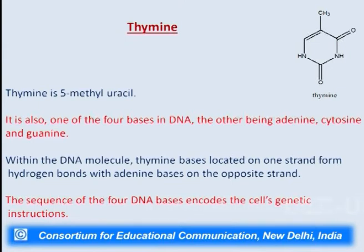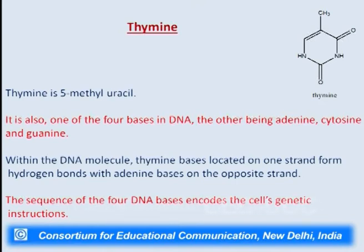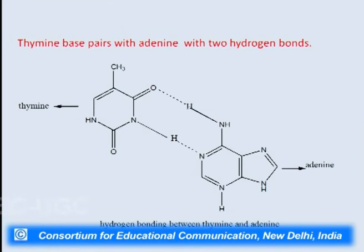The next important nucleobase is thymine, which is a pyrimidine derivative. Thymine is 5-methyluracil and can be prepared from uracil by methylation. It is one of the four important bases in DNA — the others being adenine, cytosine, and guanine. Within the DNA molecule, thymine bases on one strand form hydrogen bonds with adenine bases on the opposite strand. The sequence of the four DNA bases encodes the cell's genetic instructions. Thymine base pairs with adenine through two hydrogen bonds, the same as uracil since thymine is only a methyl derivative of uracil.